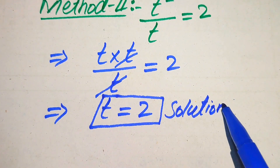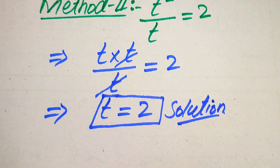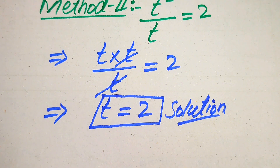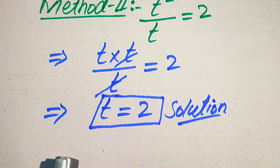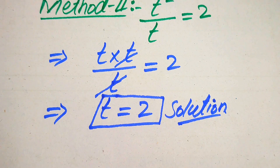This is our final answer. The reason for explaining the first method is: if your examiner asks you to identify extraneous roots separately from the solution, use the first method. If the examiner only asks you to find the solution, the second method is sufficient. Thank you for watching — please subscribe for more videos.